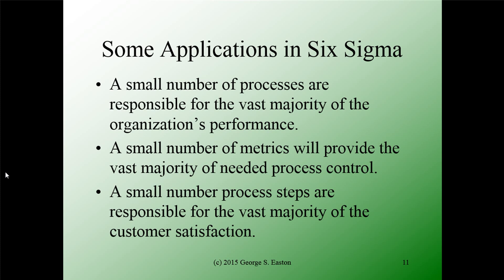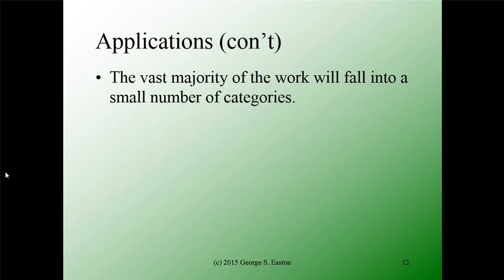For example, a small number of process steps drive the vast majority of customer satisfaction. This next point is especially important in the context of professional services: the vast majority of the work falls into a small number of categories. This means that work in those categories can be cast into processes because they happen relatively frequently. The 20% of work that doesn't fall into those categories will have to be handled on a custom basis. The reality of how work falls into categories is very different than how it seems to the people doing the work, because it's the non-standard stuff that consumes the vast majority of their attention.